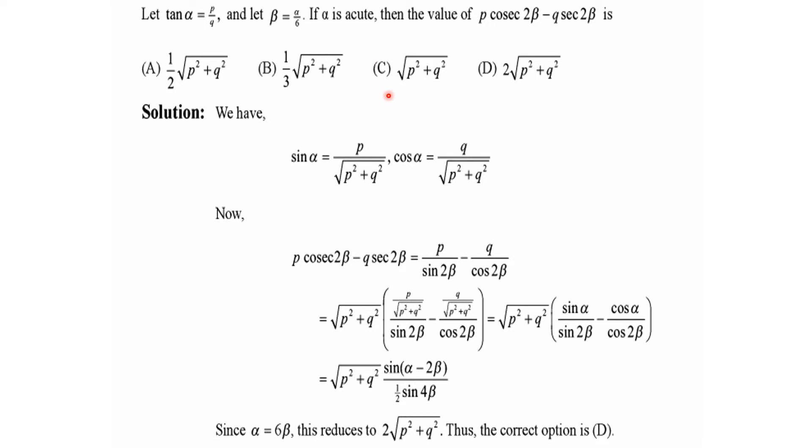So here we have tan α value. We will make this triangle. Here we have tan α = p/q, and sin α value is p divided by √(p² + q²), and cos α value is q divided by √(p² + q²).